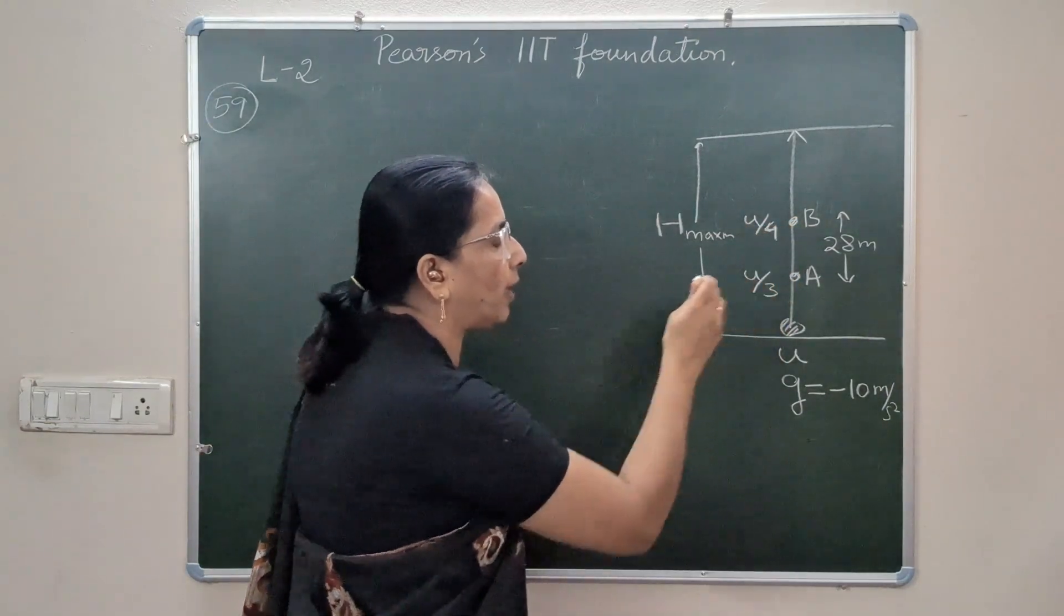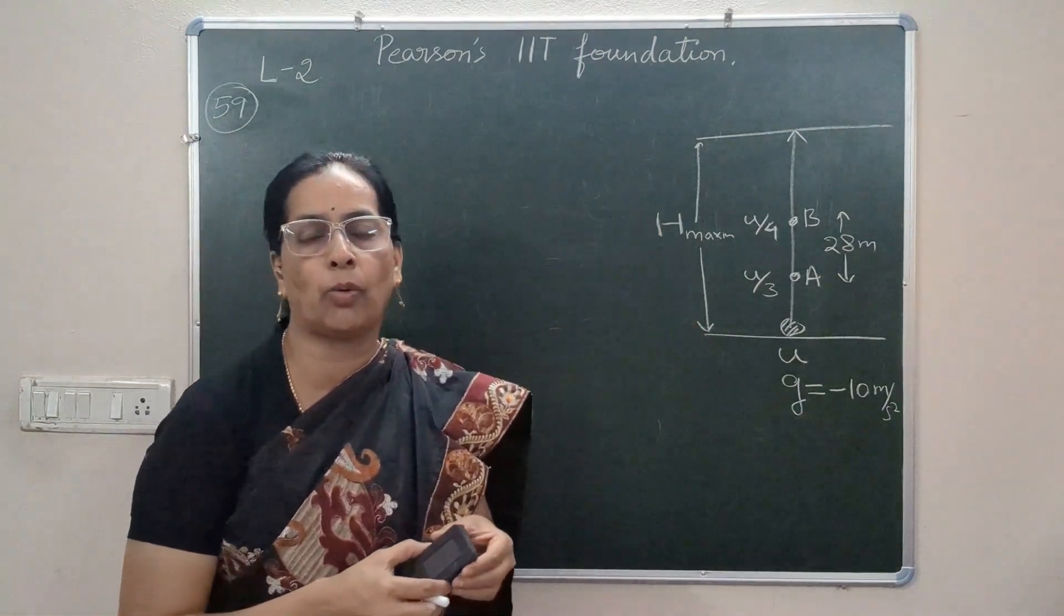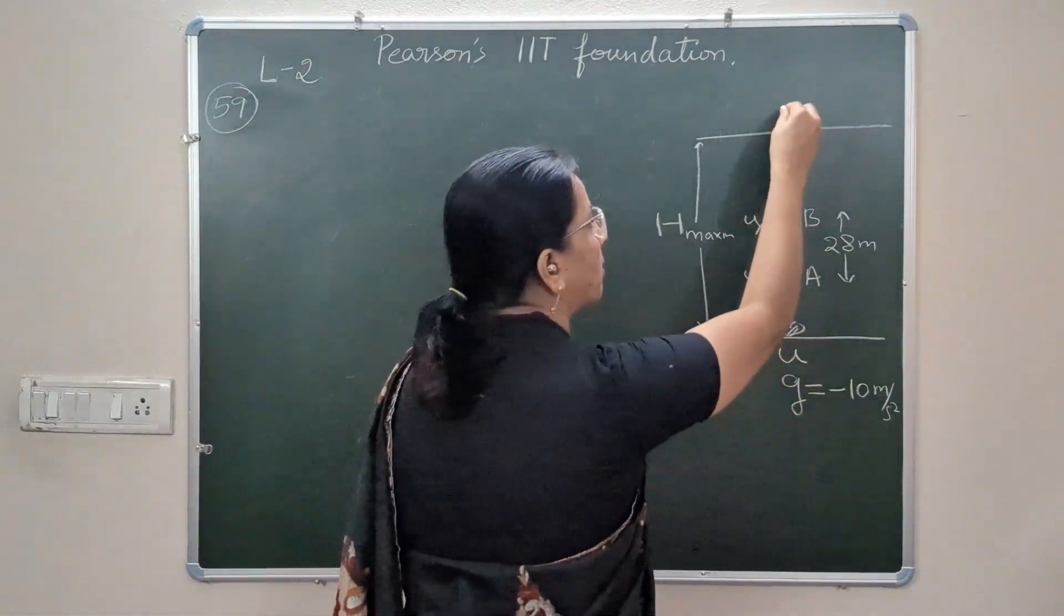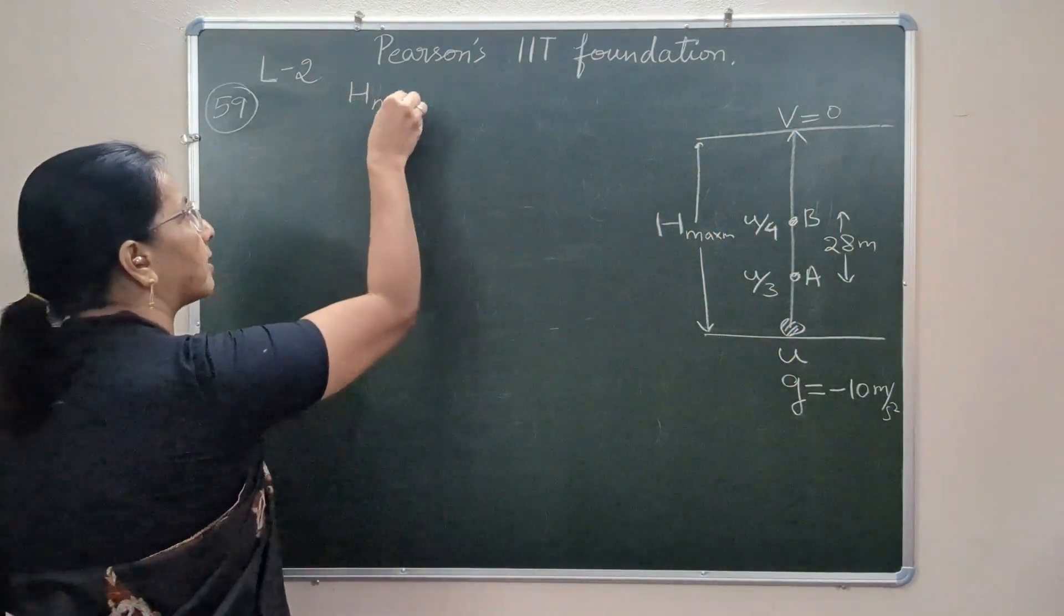So u/3, u/4. With this information we have to find the maximum height acquired by the body. At the maximum height the final velocity turns 0, so we have to find h_max.